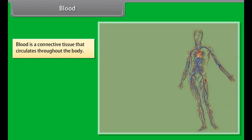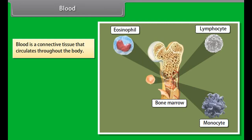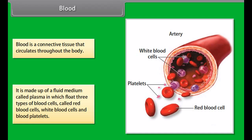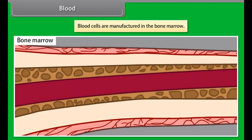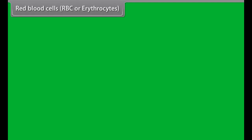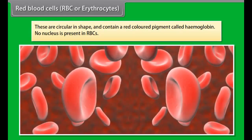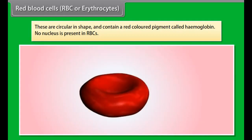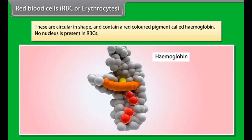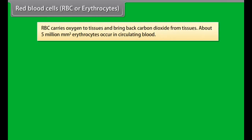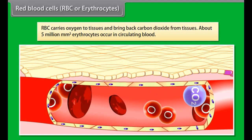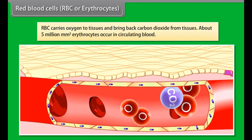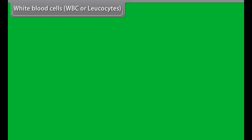Blood is a connective tissue that circulates throughout the body. It is made up of a fluid medium called plasma, in which float three types of blood cells: red blood cells, white blood cells and blood platelets. Blood cells are manufactured in the bone marrow. Red blood cells, or erythrocytes, are circular in shape and contain a red-colored pigment called hemoglobin. They have no nucleus. RBCs carry oxygen to tissues and bring back carbon dioxide from tissues. About 5 million per mm³ erythrocytes occur in circulating blood.